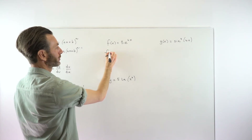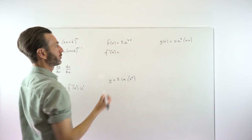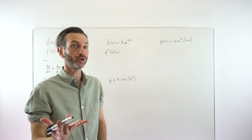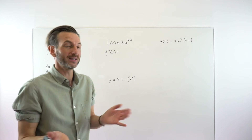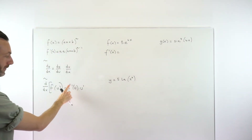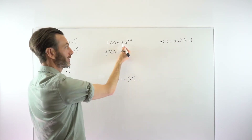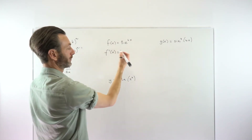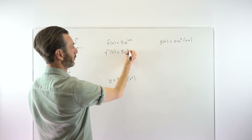This is in a differentiable form, so we can go straight to f prime of x. An exponential function differentiates by leaving the function alone — the derivative of e to the x is just e to the x. The 3 is just a constant not playing any direct part. So our first part — differentiating the outer function — is just 3e to the 4x.